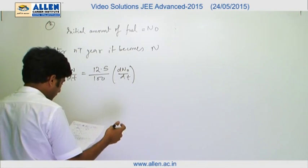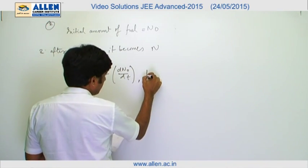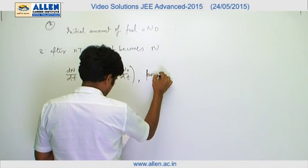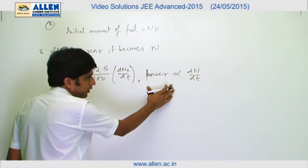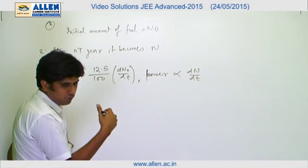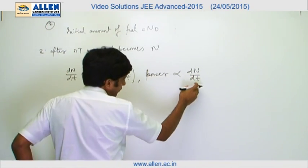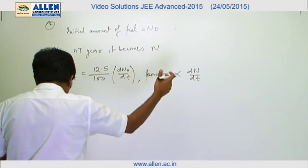It can be written because as we know that power is proportional to dN/dt, because power is the multiplication of energy released in one equation and dN/dt. Therefore, we can say that power is proportional to dN/dt.